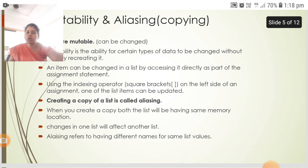Creating a copy of the list is called aliasing. When you create a copy, both lists will be having the same memory location. Changes in one list will affect another list. Aliasing refers to having different names for the same list values.